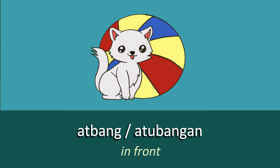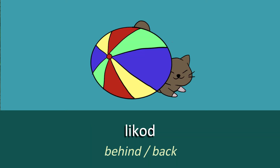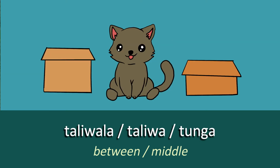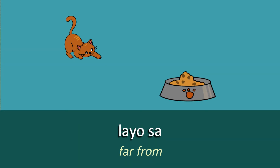Moving on, we have the word for 'In Front', which is 'Atubangan', or just say 'Atbang' for short. And the opposite — 'Behind' or 'Back' — is 'Likud'. Our next word is 'Between' or 'Middle'. You can use 'Taliwala', 'Kaliwa', or just say 'Tunga'.